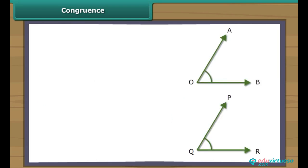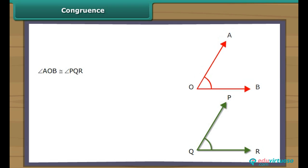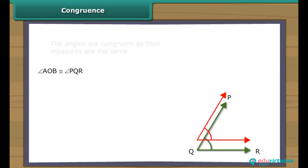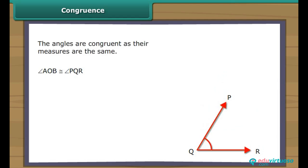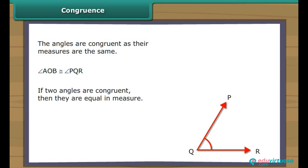Here are two angles — angle AOB and angle PQR. Let us find out if they are congruent. The angles are congruent as their measures are the same. It is also true that if two angles are congruent, then they are equal in measure.